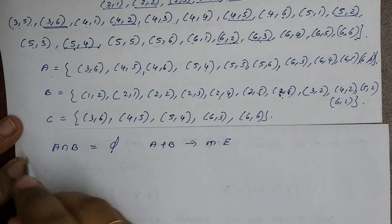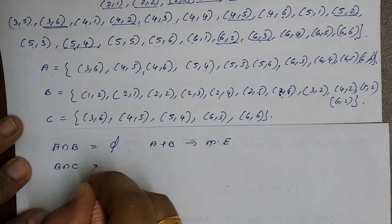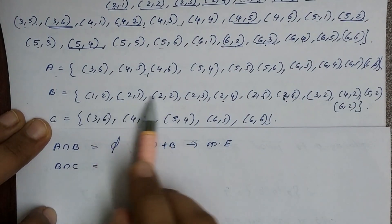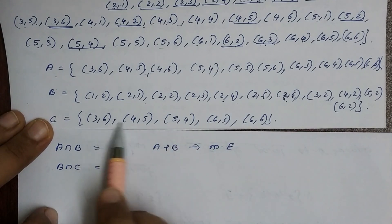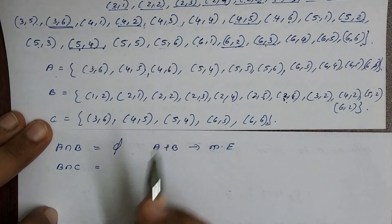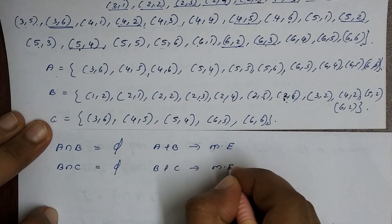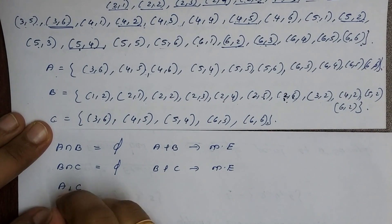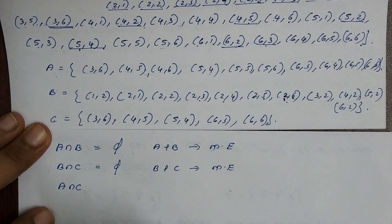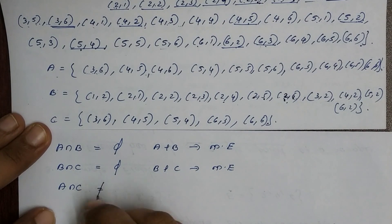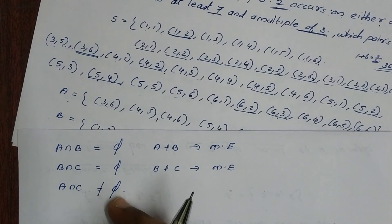Then B intersection C: B and C share common elements such as (3,6) — checking, (3,6) has no 2, so actually B and C are mutually exclusive since C = {(3,6),(4,5),(5,4),(6,3),(6,6)} and none contain a 2. Then A intersection C: A and C share common elements, so A and C are not mutually exclusive.